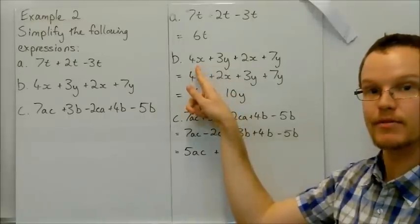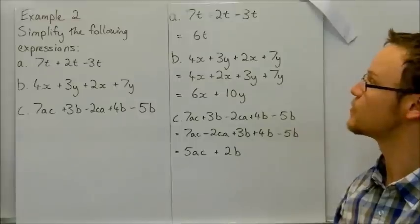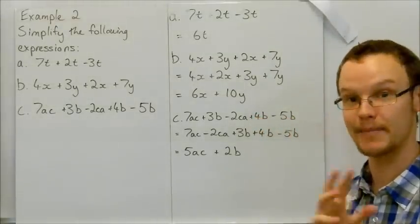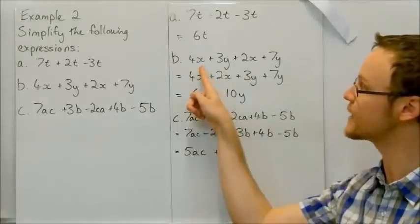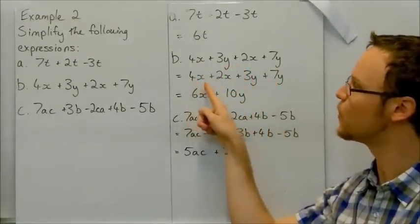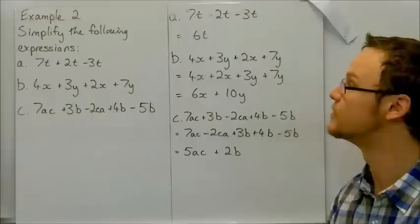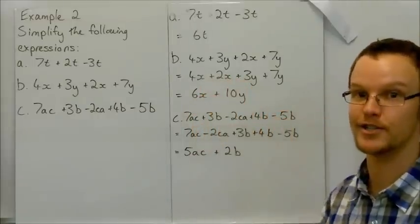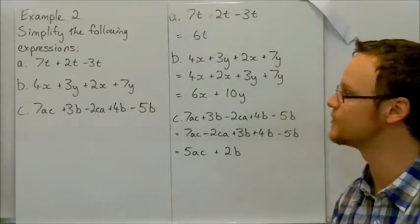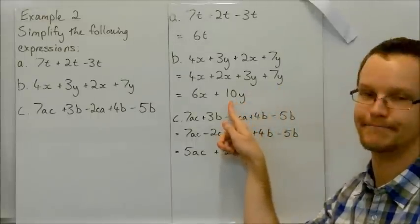With our next expression, 4x plus 3y plus 2x plus 7y. There are two different types of terms, two families of terms. We've got the x family and the y family. So the x's we can put together and put 4x plus 2x. And we can have the plus 3y plus 7y together as well. There are no minuses, no subtraction signs that we've had to carry with them. So they've all got addition signs. So 4x plus 2x is 6x. 3y plus 7y, 10y.